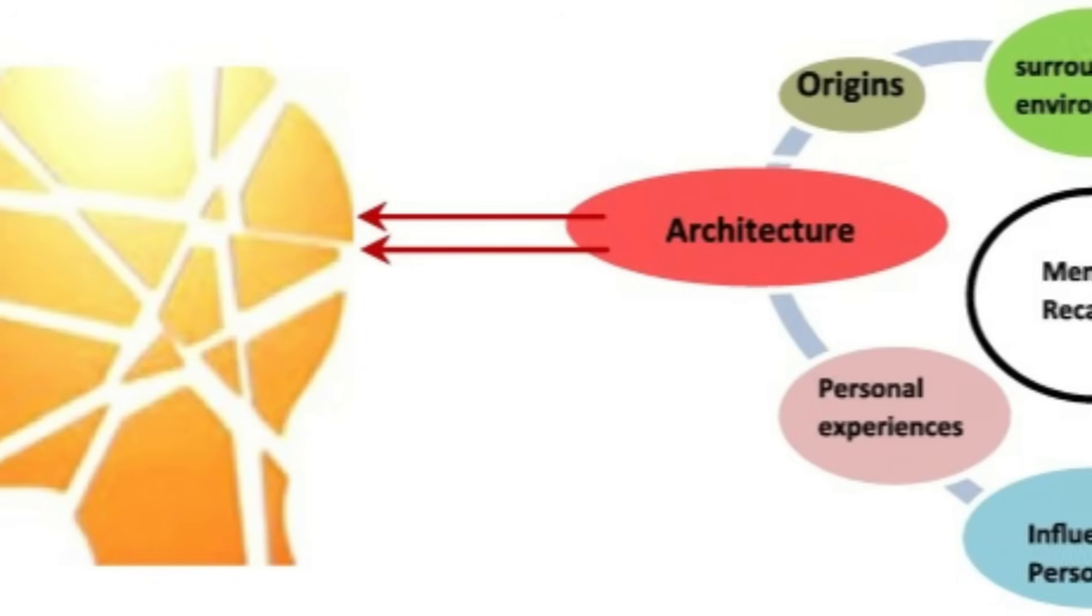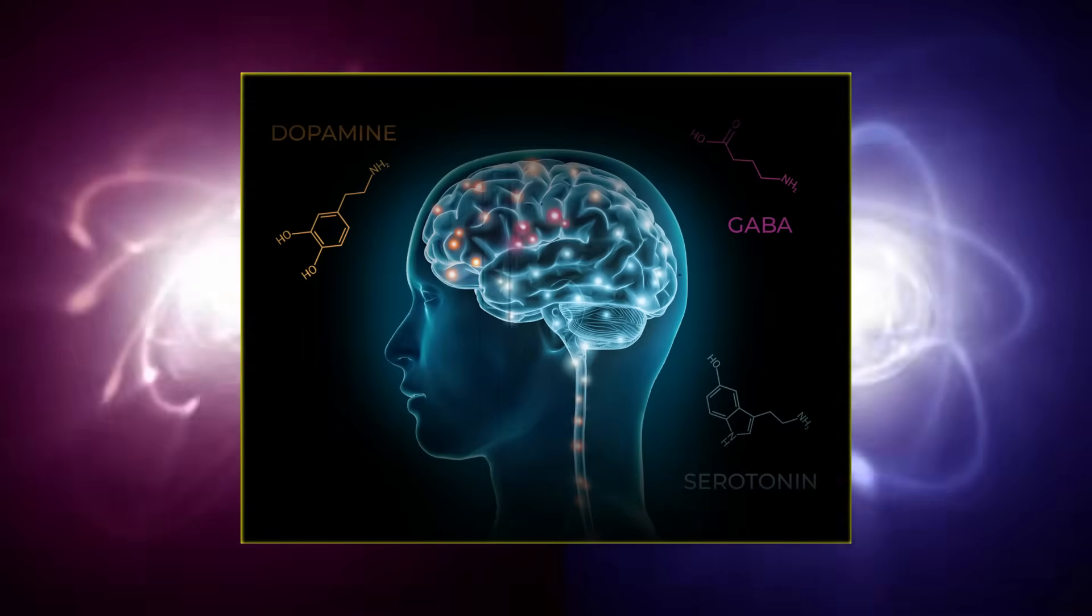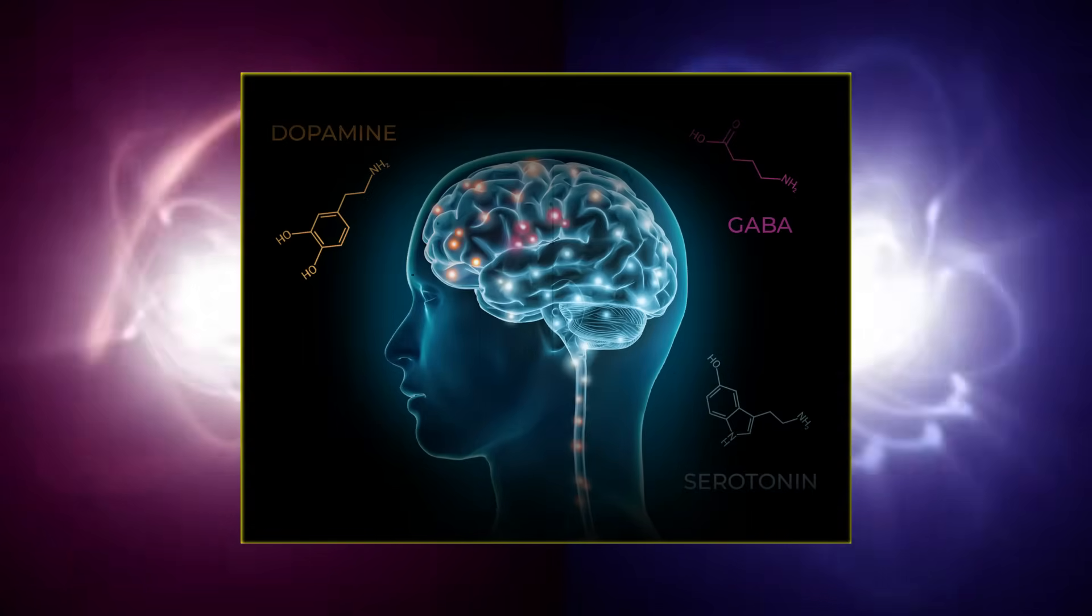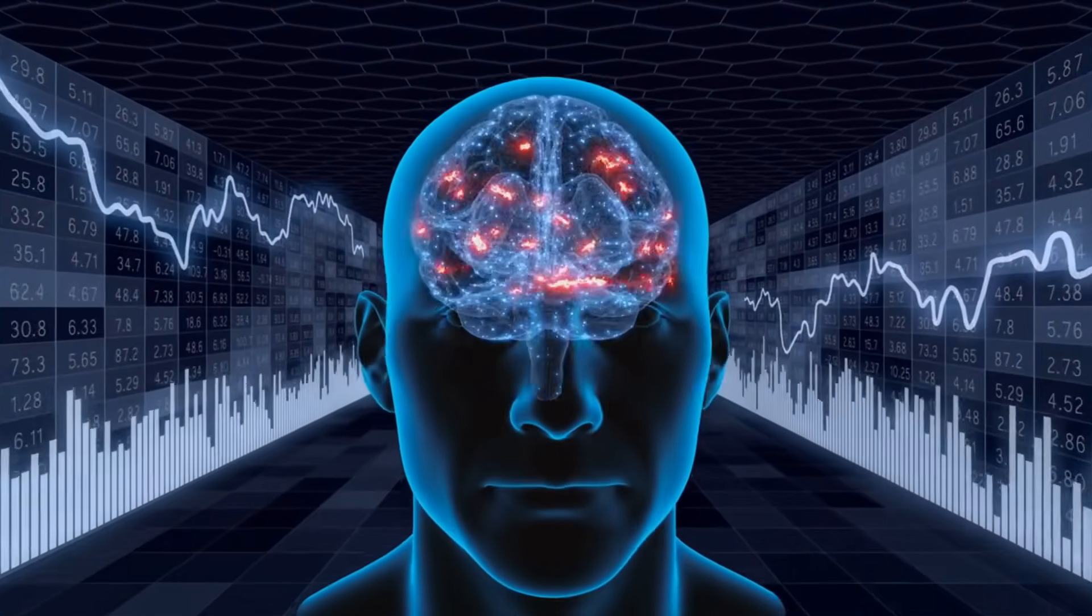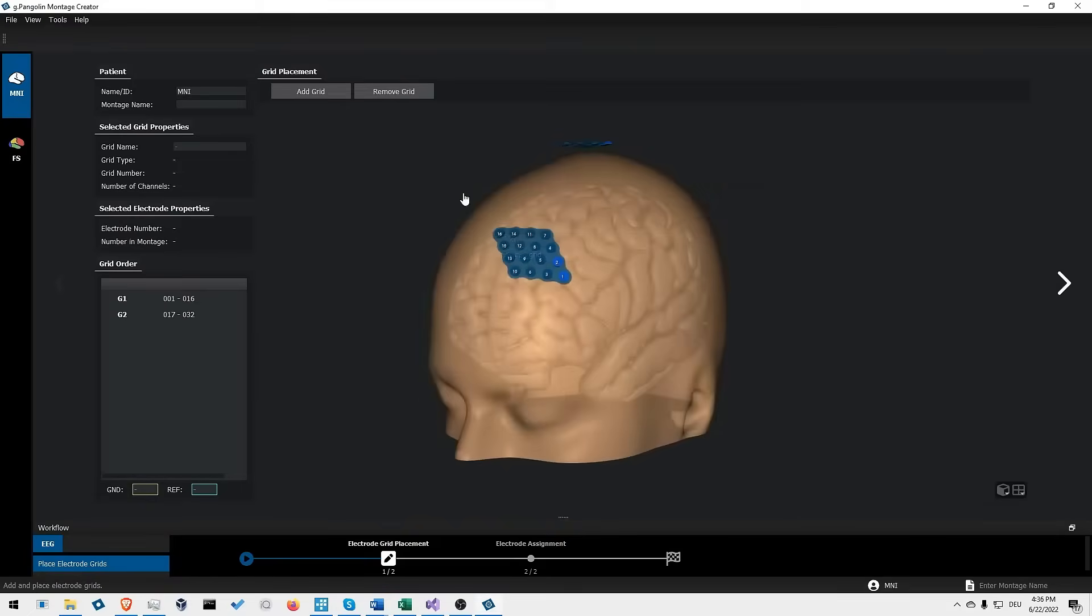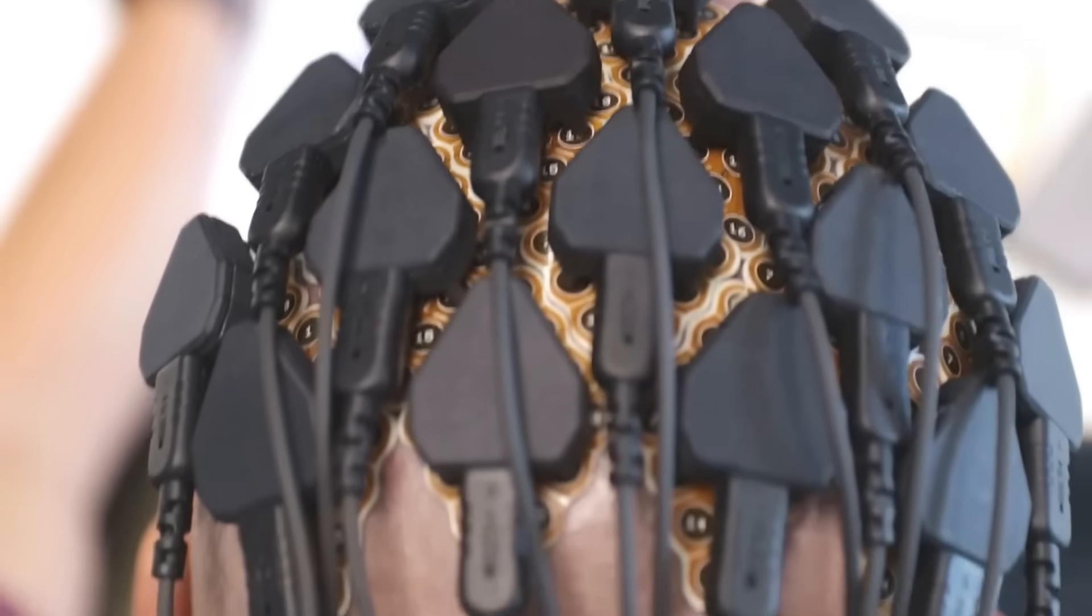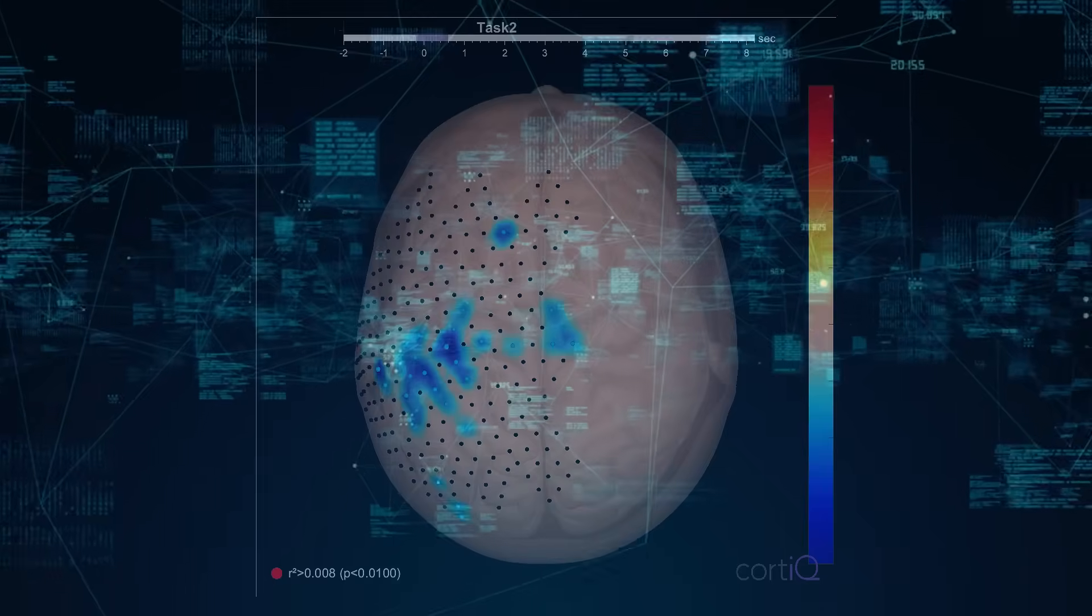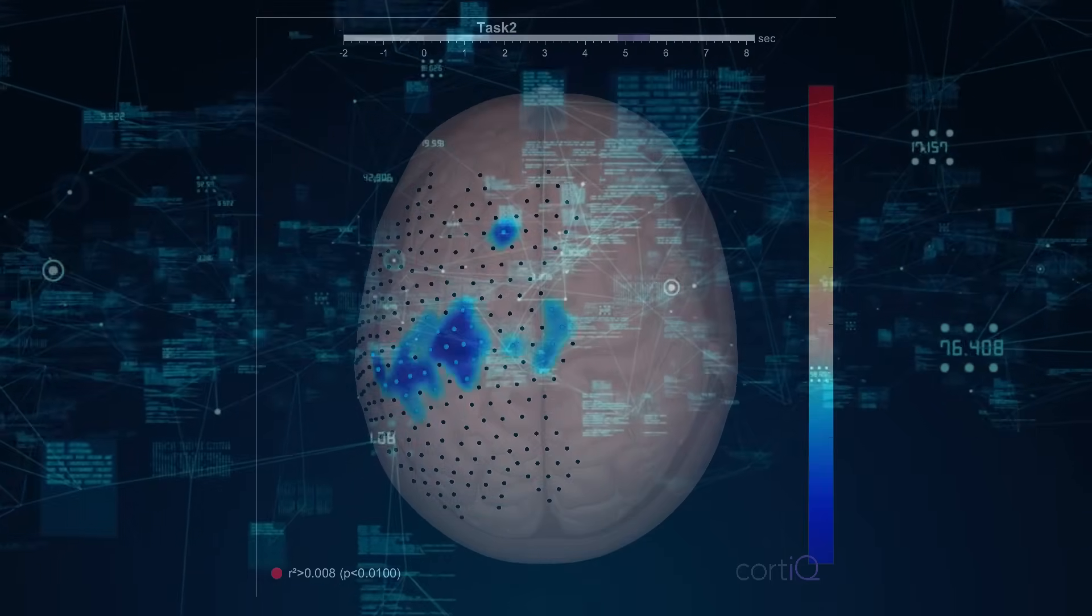Every step of this journey challenges conventional wisdom and invites us to imagine a future where science and philosophy converge in ways we never thought possible. In wrapping up this exploration, one thing is certain. The possibility of quantum entanglement in human brain waves is a discovery that could reshape our understanding of the mind. As we continue to investigate these phenomena, one can only wonder what other secrets lie hidden within the neural fabric of our brains. If you're fascinated by these groundbreaking insights and want to stay at the cutting edge of science and technology, then make sure you subscribe. If you find these revelations interesting, don't forget to subscribe.